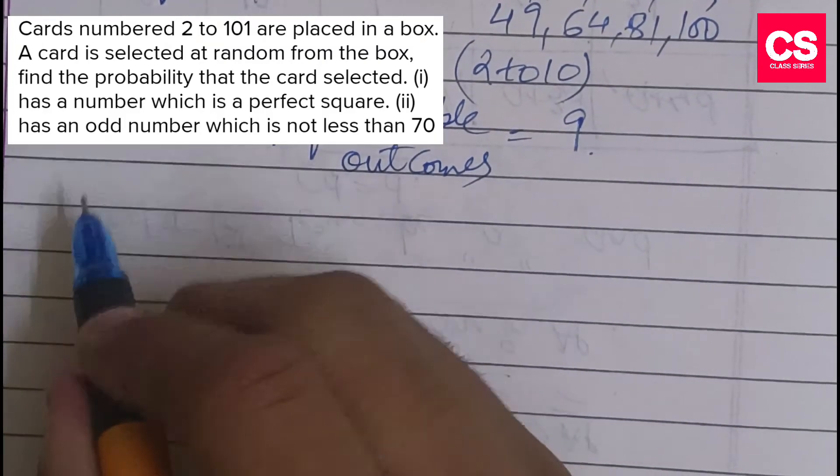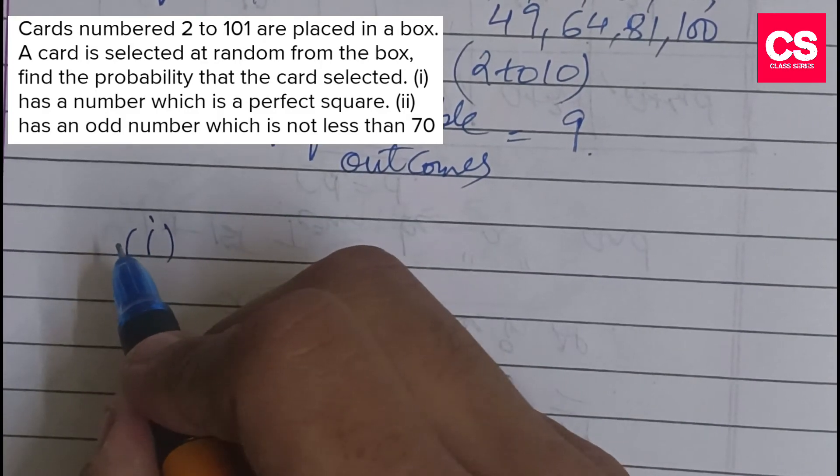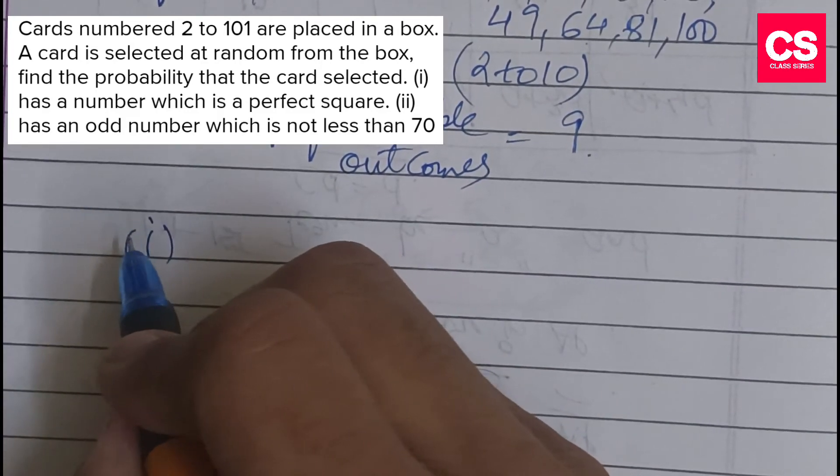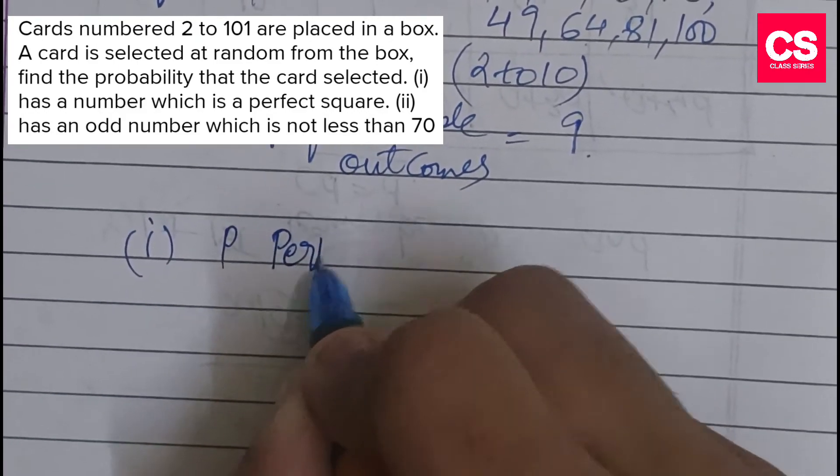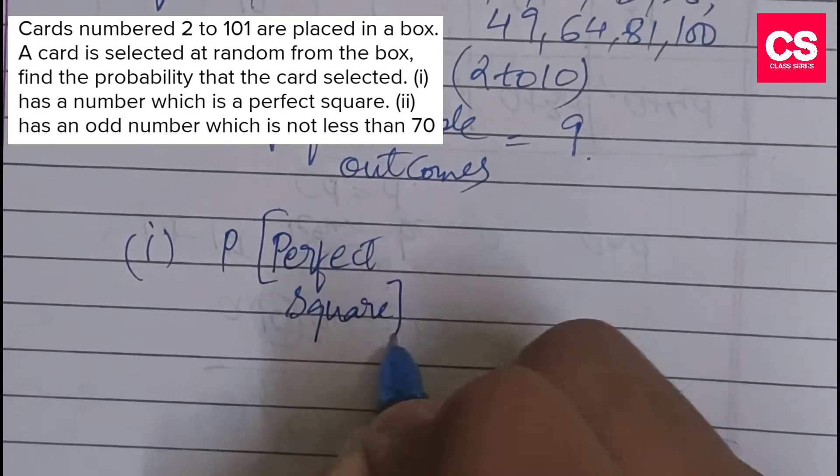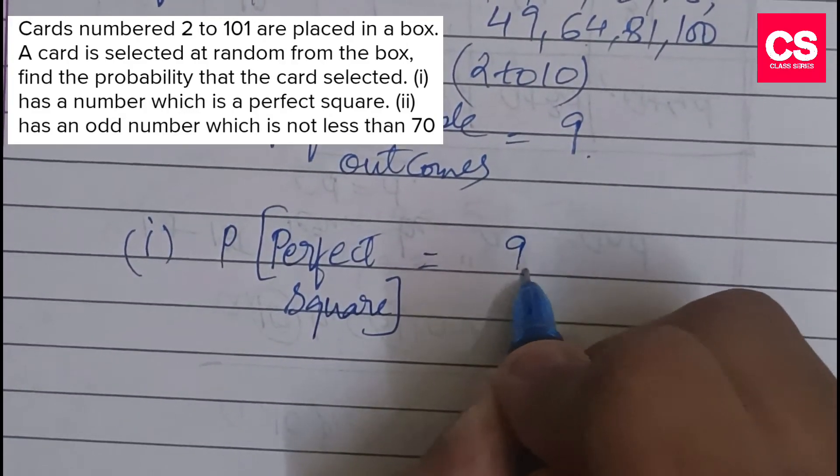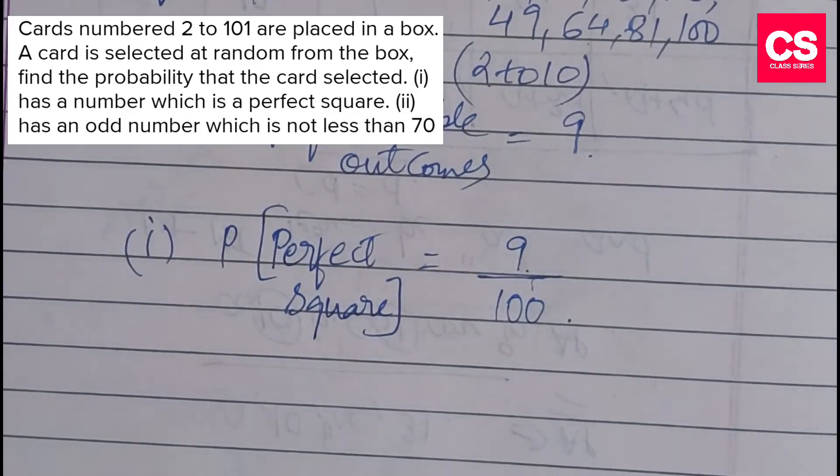Now for the first scenario, find the probability that has a number which is a perfect square. The probability of perfect square will be: favorable outcomes are 9, 9 perfect squares out of 100. So the probability is 9/100.